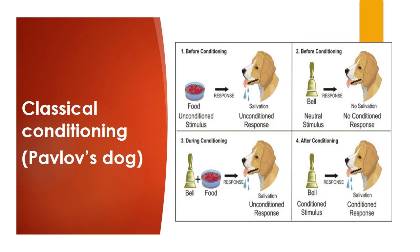Pavlov wanted to change the dog's behavior and make it salivate in response to the bell. So Pavlov always rings the bell before he presents food to the dog. After repeating this many times, he observed that the dog salivates when it hears the sound of the bell, because the dog knew that food comes after the bell. The dog created an association between the sound of the bell and the food and starts to salivate in anticipation for the food. Thus, Pavlov succeeded in changing and modifying the dog's behavior.